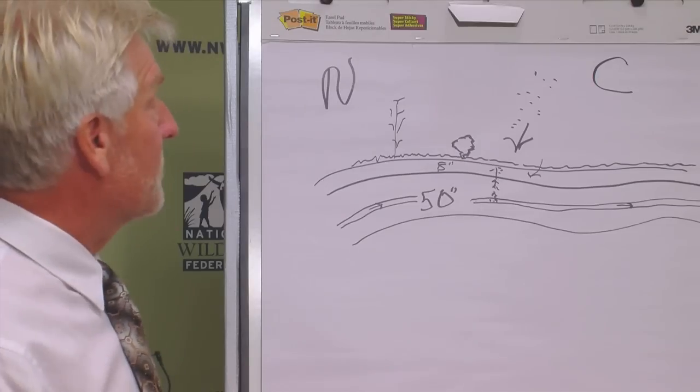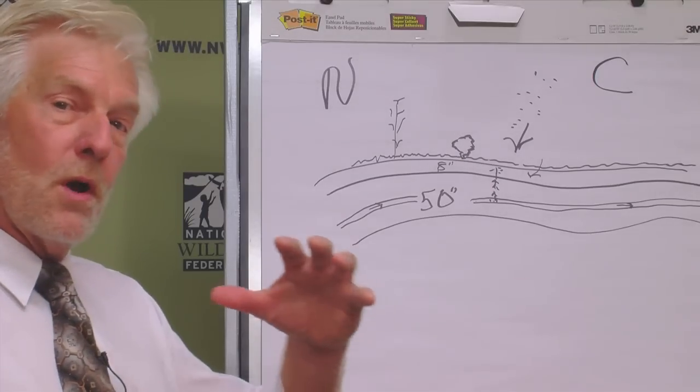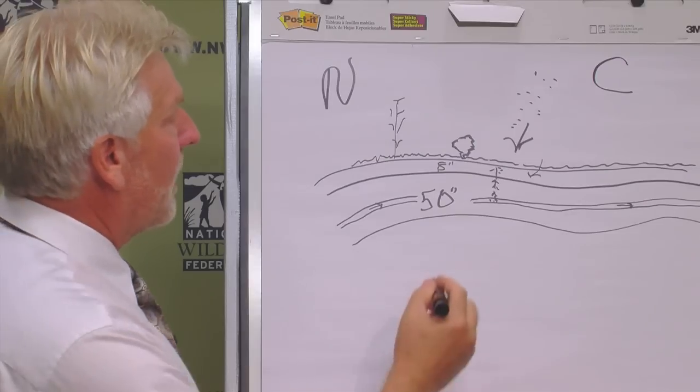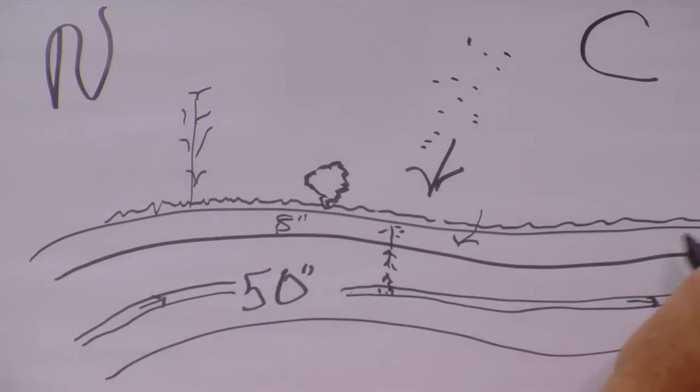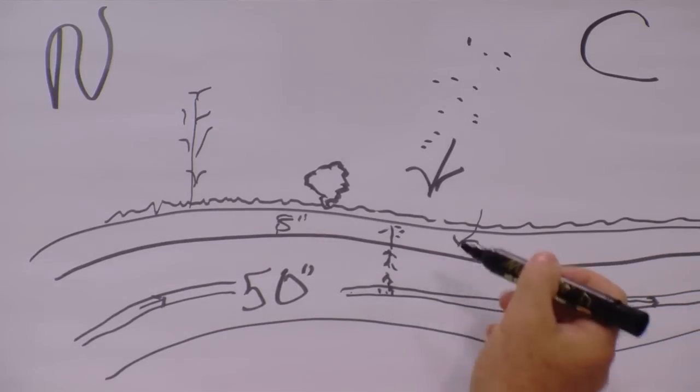So when we have these hot dry times like we have now, we have more water in that soil profile. In the past we've lived off of this eight-inch zone that is basically the tillage zone.